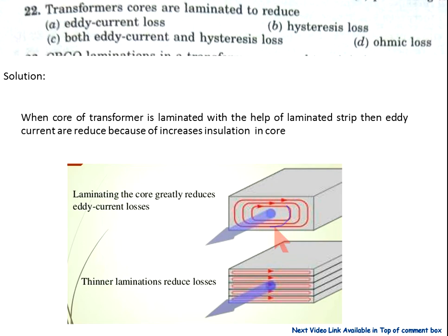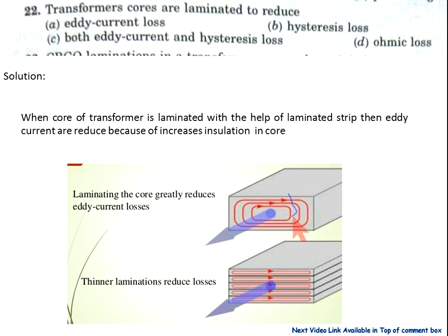Now if we divide the core and place laminated strips in between, after providing the laminated core the resistance in the path of eddy currents is increased. By increasing resistance in the eddy current path, the eddy current is reduced, and therefore eddy current losses are reduced. So option A is correct.